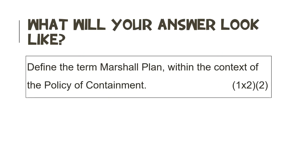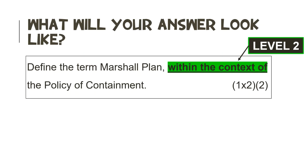Let's look at the second question. The question says: 'Define the term Marshall Plan within the context of the policy of containment.' When we read this question, do you think this is a level 1 or a level 2 definition question, and why? If you said level 2, then you are 100% correct, because the question says 'within the context of.' Remember, when we see those words, we know that we are dealing with a level 2 question. Are we ready to answer the question yet? No, because we have to know what the question is asking us to do.